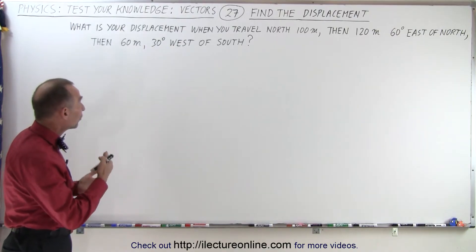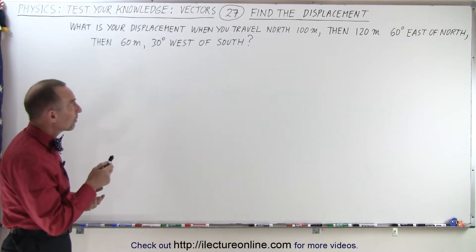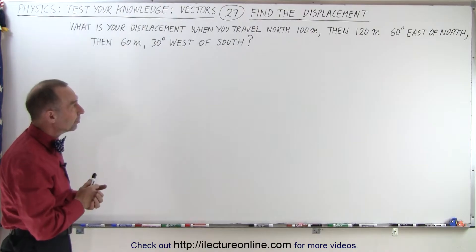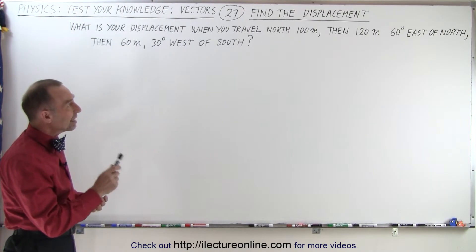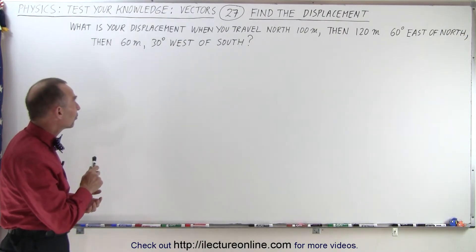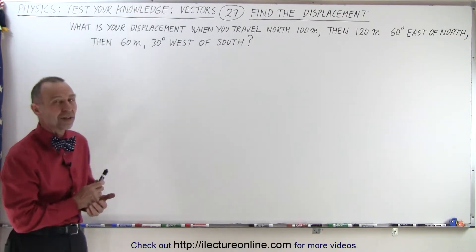We're told to find a displacement when you travel north 100 meters, then 120 meters in the direction 60 degrees east of north, and then 60 meters in the direction 30 degrees west of south.